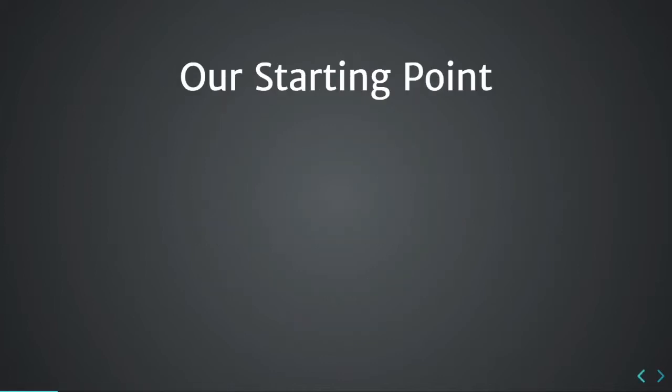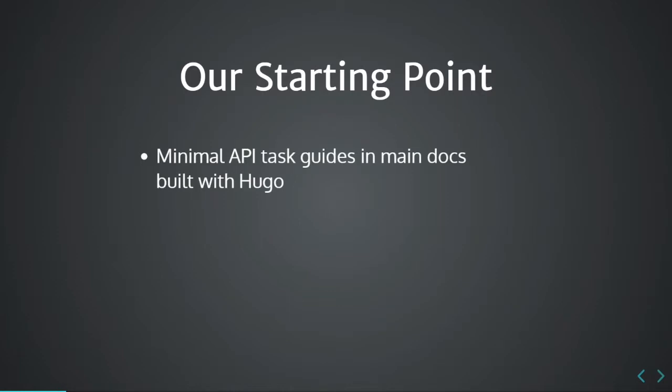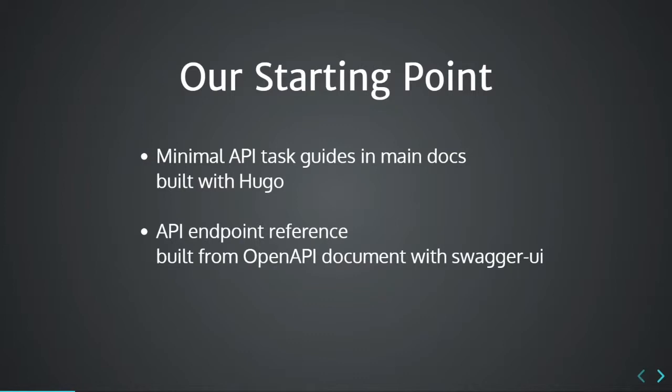That's how we got to our starting point, which is that we have minimal API task guides in our main docs. Our main docs are primarily about using our platform, built with Hugo static site generator, and there are some guides about how to do certain things in our API. And then we have an API endpoint reference built from an OpenAPI document with Swagger UI.